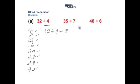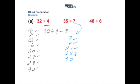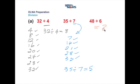Likewise, for 35 divided by 7, look at the seven times table — adding 7 each time: 7, 14... four sevens are 28 and five sevens are 35. Because it takes five sevens to reach 35, in reverse, 35 divided by 7 equals 5. For the last number, working through the six times table you would find it takes eight sixes to get to 48 — so 48 divided by 6 is 8.